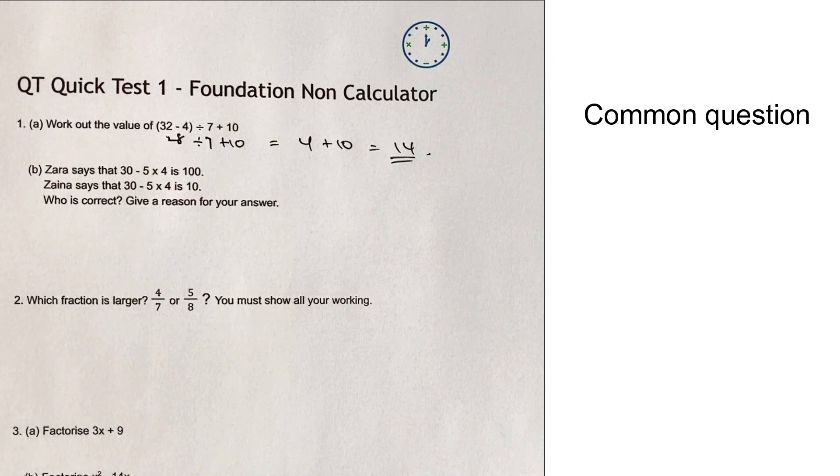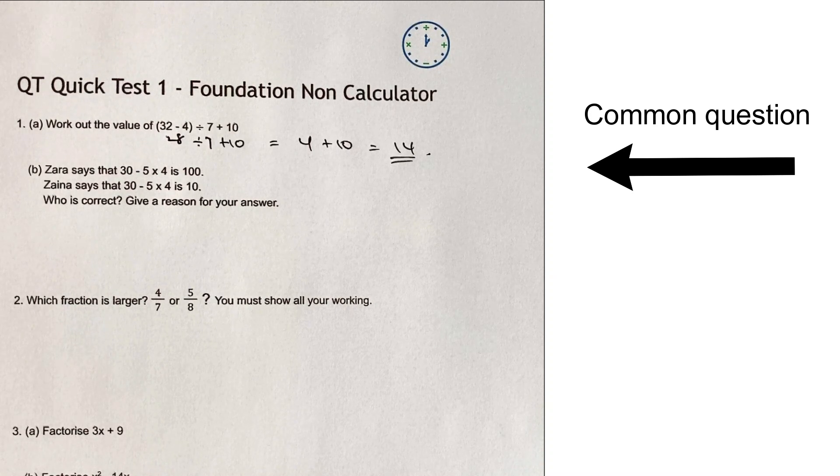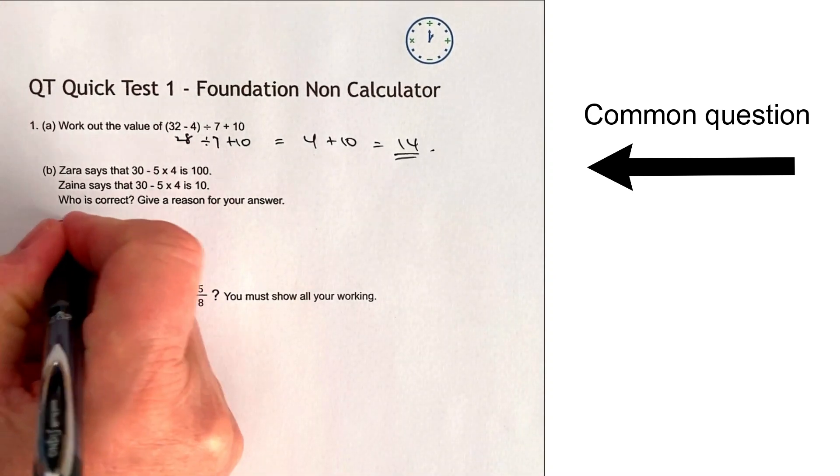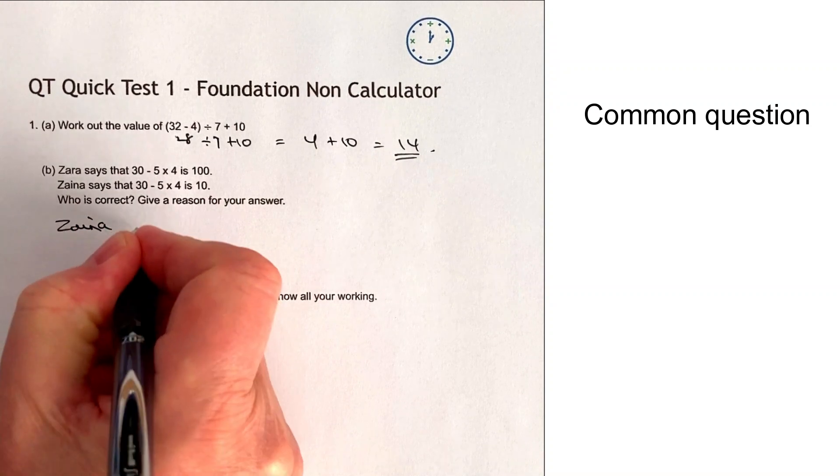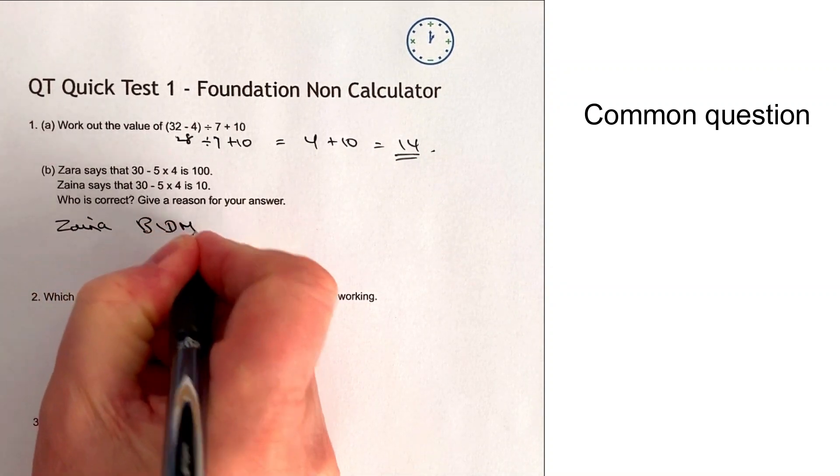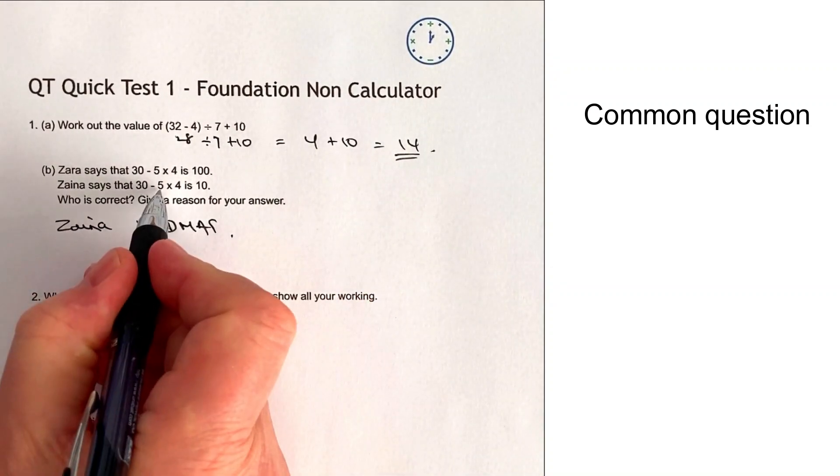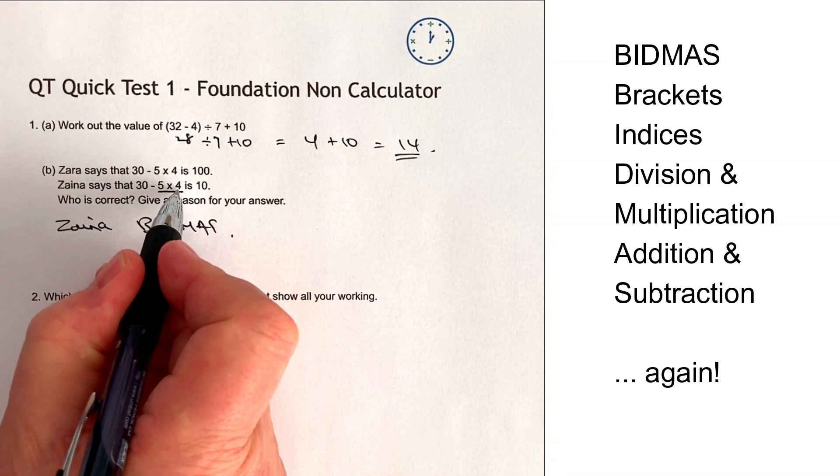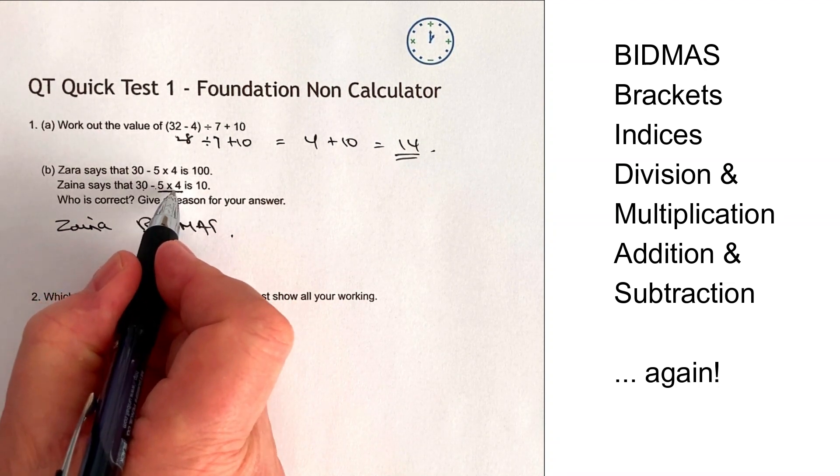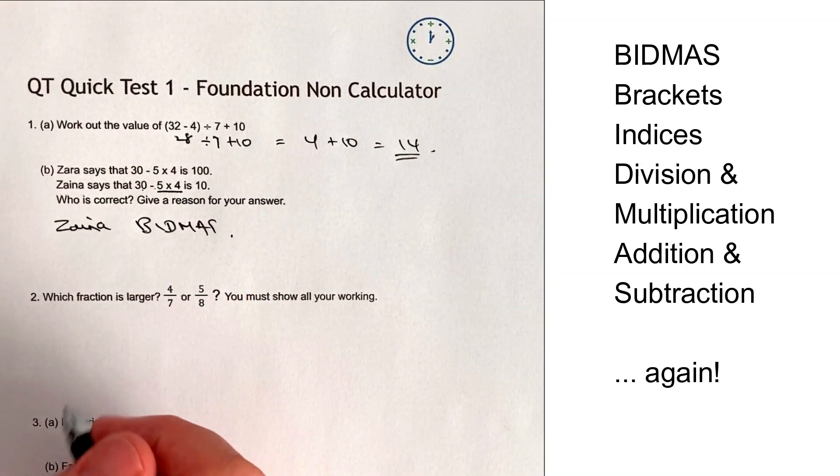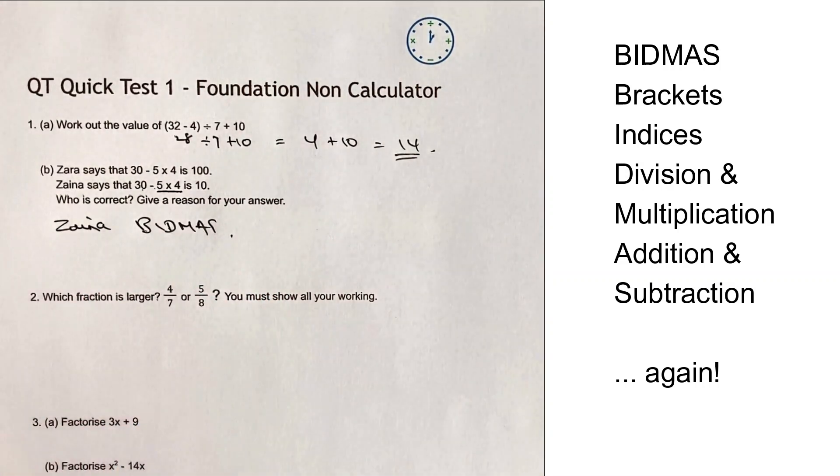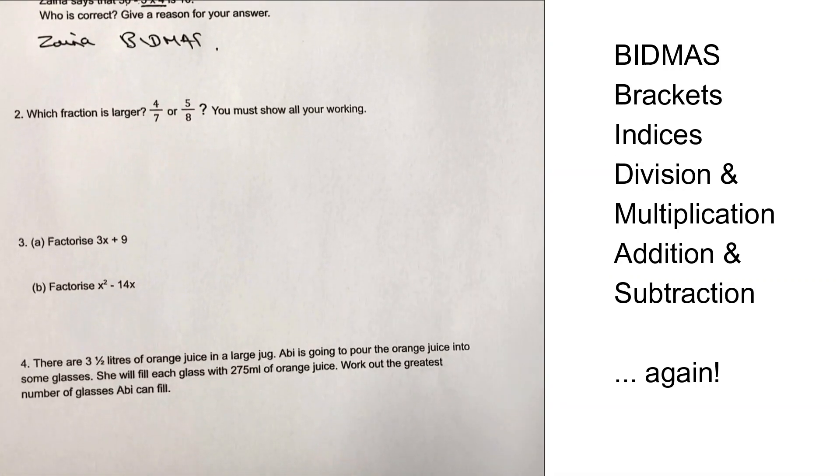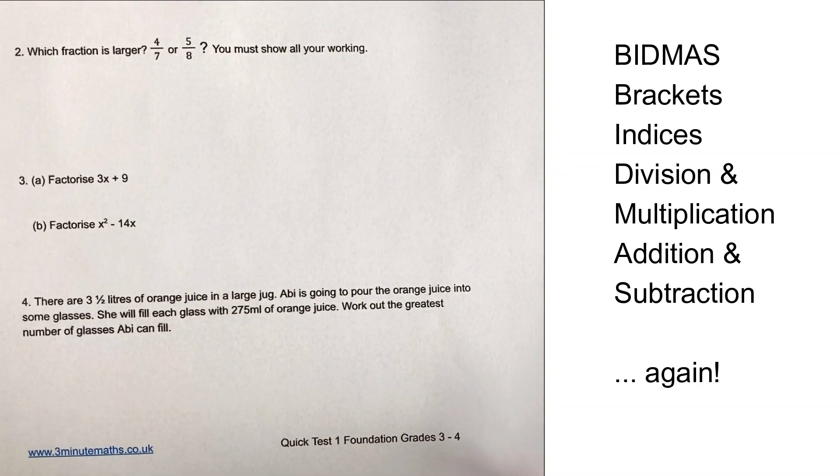Let's move on then to part B of this. Zara says that that is equal to 100, and Zena says that that is actually equal to 10. Who's correct? Well, actually, Zena is correct on this particular one because of BIDMAS, because what we actually do is we do the multiplication, which is 5 times 4 is 20, and 30 minus 20 is equal to 10. So therefore, Zena is correct on this one.